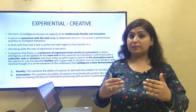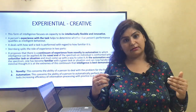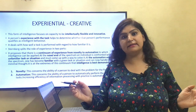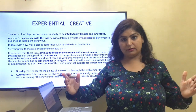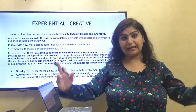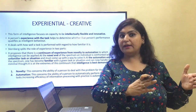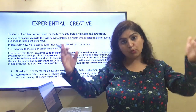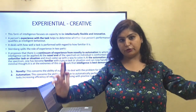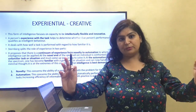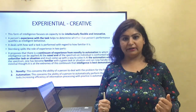In automatization, there is some familiar task; in novelty, some unfamiliar or new task. Sternberg said that on the extremes of this continuum — novelty on one end, automatization on the other — intelligence is best demonstrated. Both novelty and automatization have to be there. This is what we mean by experiential creative intelligence.